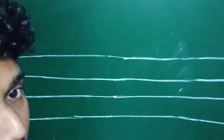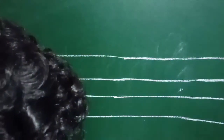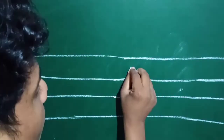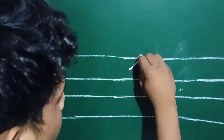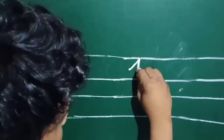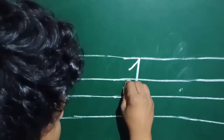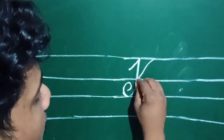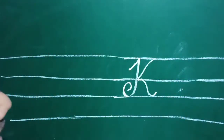We will study how to write capital letter K. Capital letter K — like this. It starts from here, then go down, go to the third line, then like that. Capital letter K.